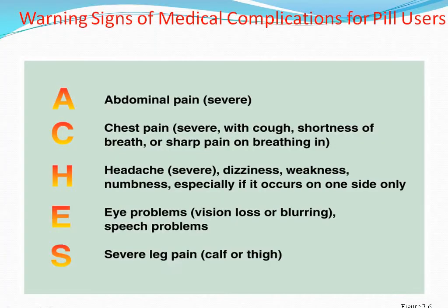The warning signs of medical complications for pill users are: severe abdominal pain, chest pain, headache which could worsen and become severe, dizziness, weakness, numbness especially if it occurs on one side only, eye problems like vision loss or blurring, and lastly severe leg pain.